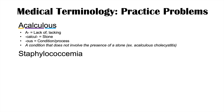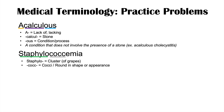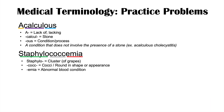The next word is staphylococcemia. Staphylo means cluster — oftentimes a cluster of grapes. Cocc refers to cocci, meaning round in shape or appearance. The suffix emia means an abnormal blood condition. Cocci are a type of round-shaped bacteria; staphylococci are round-shaped bacteria present in clusters, referred to as a cluster of grapes. So staphylococcemia is really the presence or infection of staphylococci bacteria in the blood.